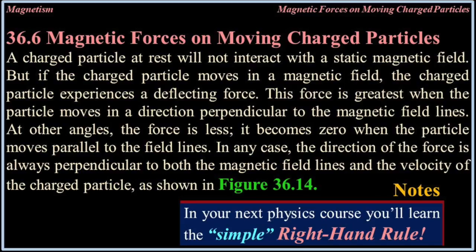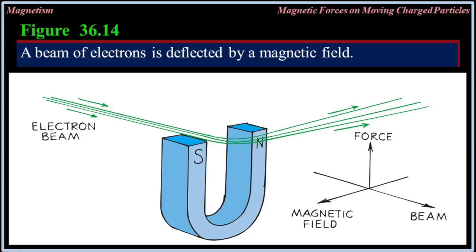36.6 Magnetic forces on moving charged particles. A charged particle at rest will not interact with a static magnetic field, but if the charged particle moves in a magnetic field it experiences a deflecting force. This force is greatest when the particle moves in a direction perpendicular to the magnetic field lines. At other angles the force is less, and it becomes zero when the particle moves parallel to the field lines. In any case, the direction of the force is always perpendicular to both the magnetic field lines and the velocity of the charged particle.